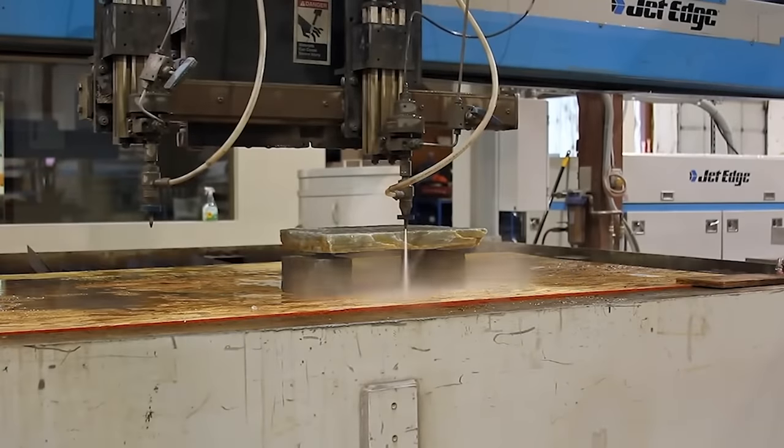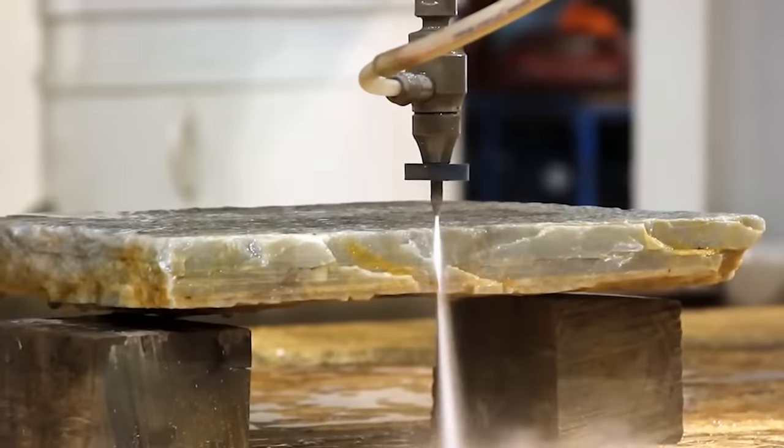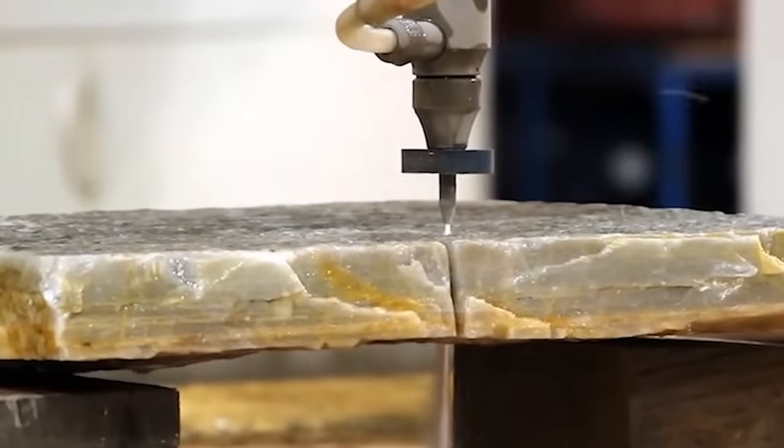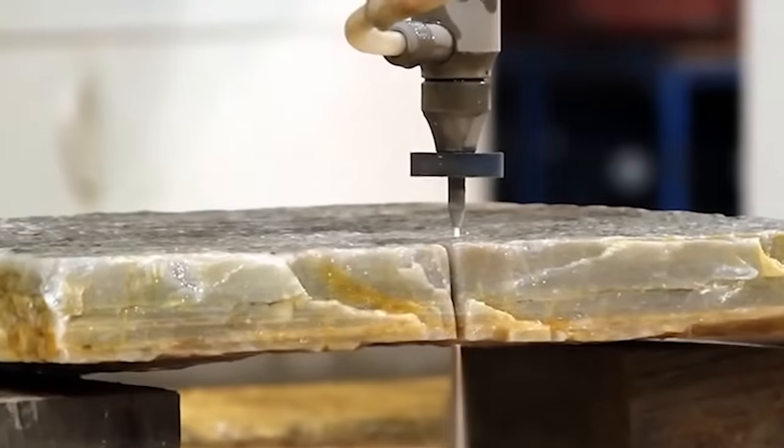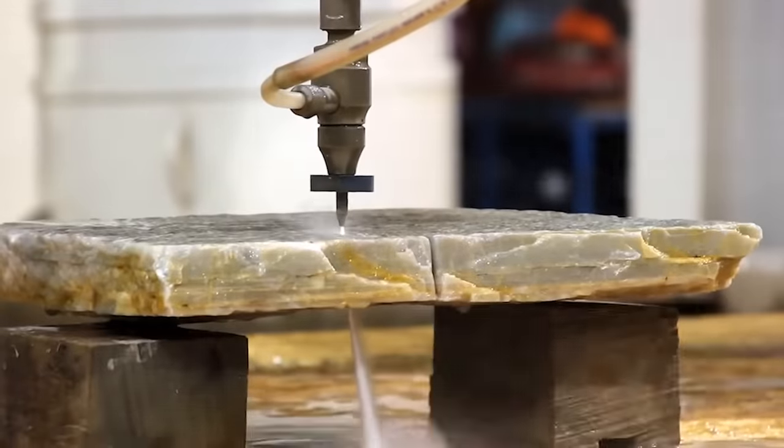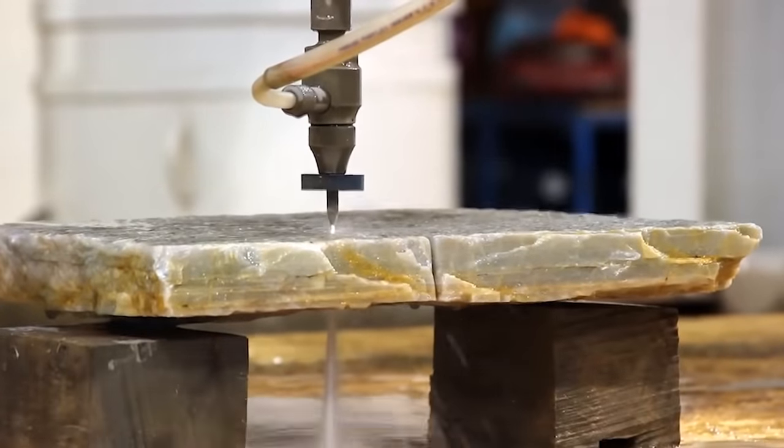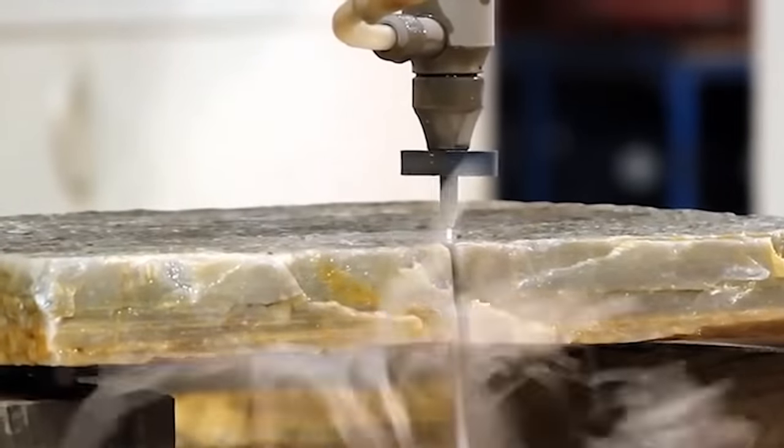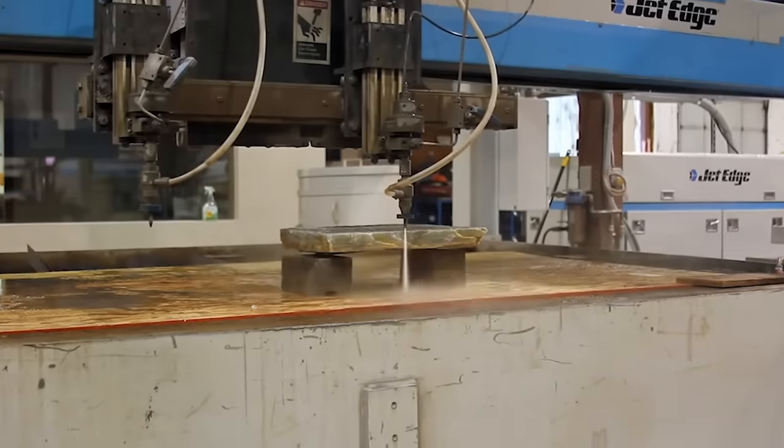A jet of water under really high pressure is capable of cutting not only metal but also stones. The video shows the Jet Edge water jet cutting machine. This device releases water at a pressure of approximately 6,900 pascals. Sometimes, if very hard metals need to be cut, abrasive materials are added to the water.